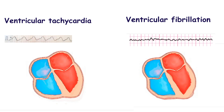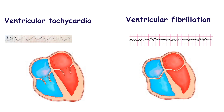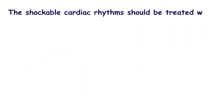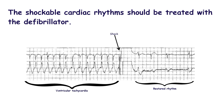The electrical activity of cardiomyocytes is uncoordinated. According to current guidelines, shockable cardiac rhythms should be treated with a defibrillator. The defibrillator performs a shock leading to the synchronous depolarization of all cardiomyocytes. Usually after this, the work of all cardiomyocytes becomes synchronous. The ventricles' contraction becomes effective and the ventricles eject the blood. Usually the normal sinus rhythm is restored.